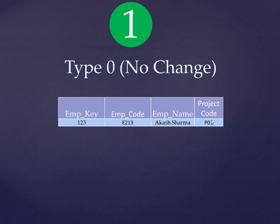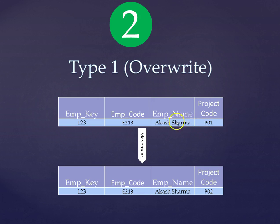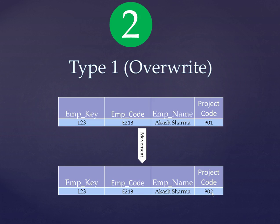Generally we want to keep track of a change. Moving on to Type 1, which is overwrite — if the project for Akash is changing from Project 1 to Project 2, we are just tracking the Project 2 information. The change is overwritten in the same table from P01 to P02. This creates a similar problem: an impression will go that since the beginning the employee has worked only on Project 2.